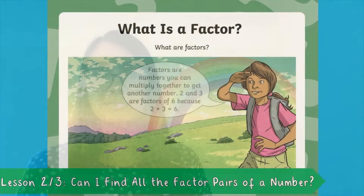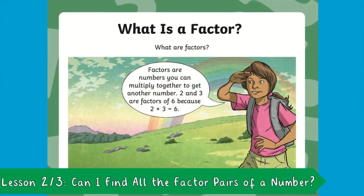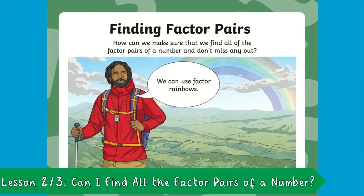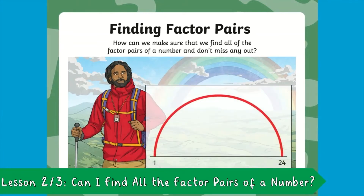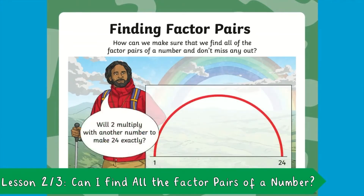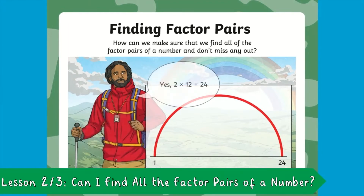In the second lesson, Darshana teaches your children how to find all the factor pairs of a number. Factors are numbers you can multiply together to get another number, so 2 and 3 are factors of 6. The easiest factor pair to find is always the number itself multiplied by 1. Will 2 multiply with another number to make 24 exactly? Yes, because 2 times 12 equals 24.